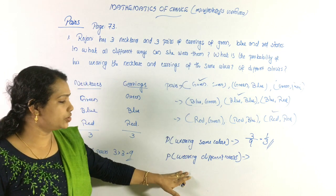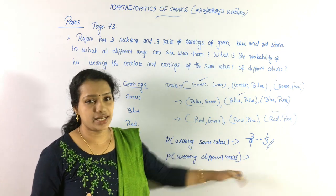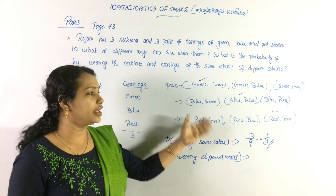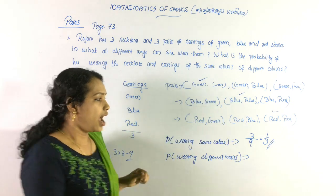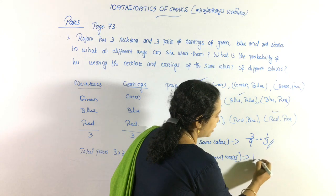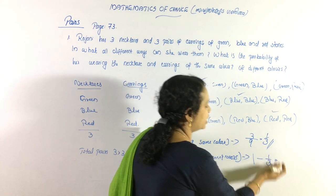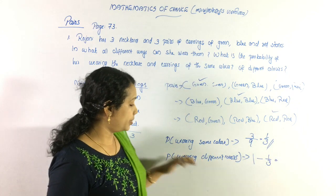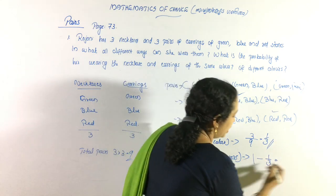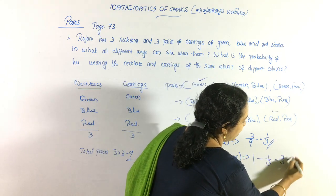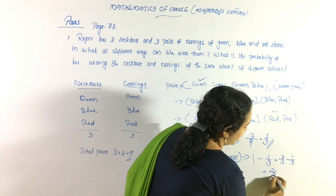Now we have to find the probability of wearing different colors. The probability of different colors is 1 minus 1 by 3, which equals 2 by 3.